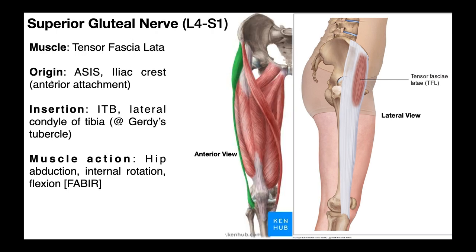The origin of the tensor fascia lata is the ASIS — the anterior superior iliac spine — and then the iliac crest that trails it. That's the origin of the tensor fascia lata. Here's the muscular belly, and then down here it inserts on Gerdy's tubercle. In some cases you'll just see the insertion written as the IT band, or iliotibial band, but if you want to be specific, it's Gerdy's tubercle on the lateral condyle of the tibia.